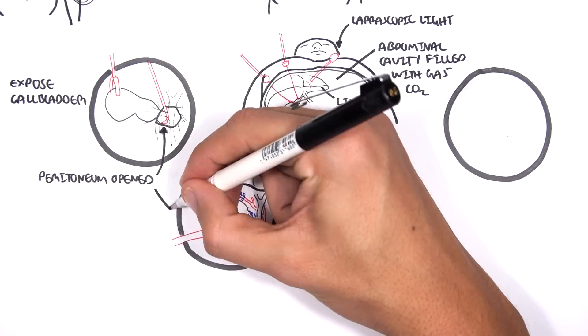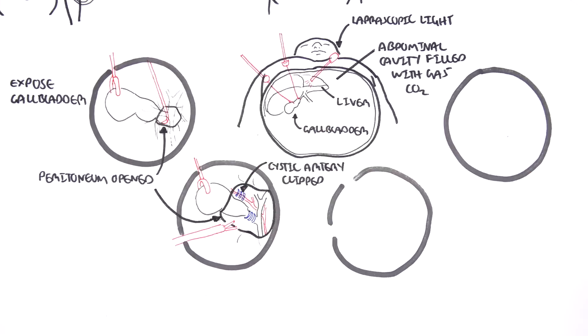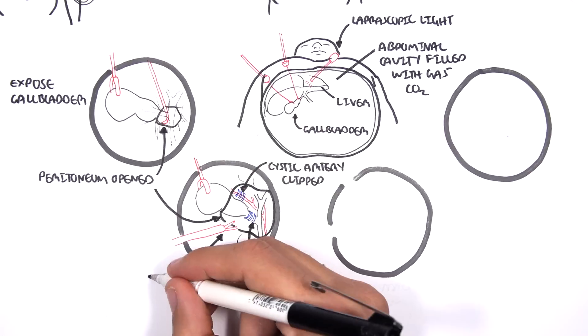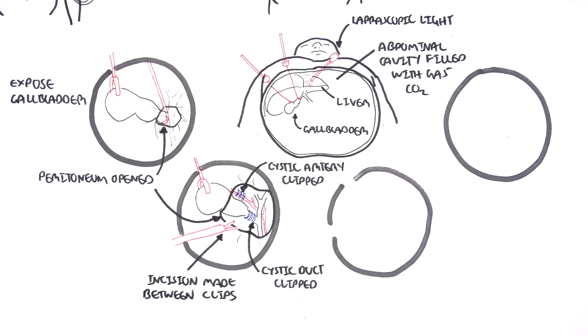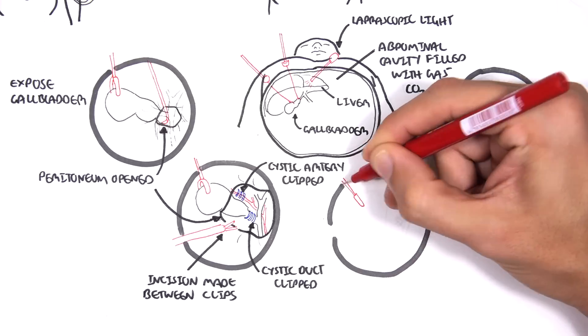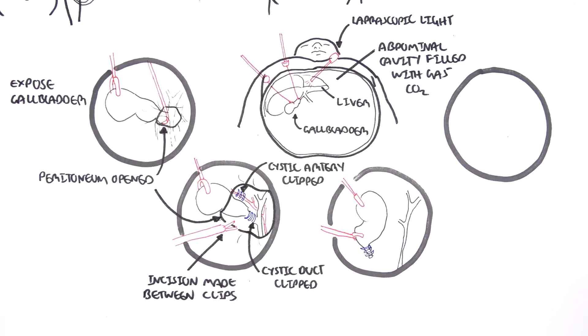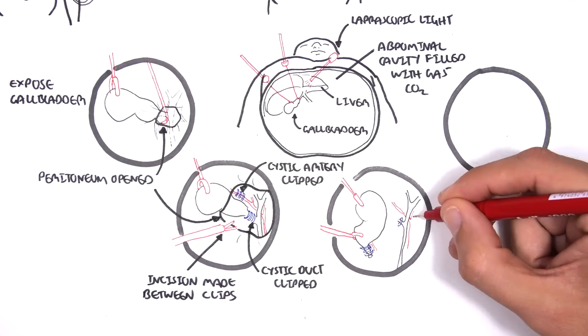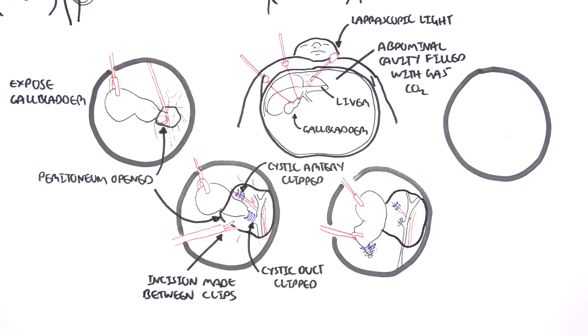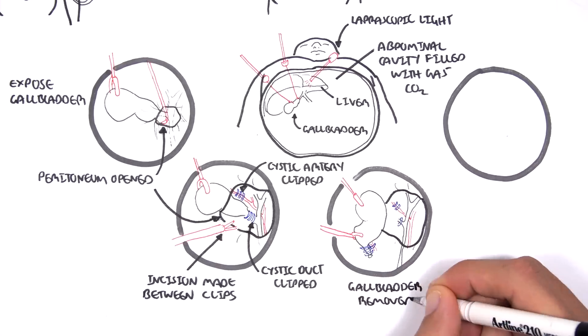And then incisions are made in between the clips. This is in order to prevent spillage of contents within the ducts. Once the incisions are made, the gallbladder can be safely removed.